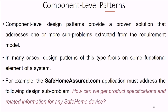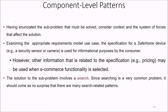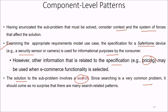Component-level design patterns provide a proven solution that addresses sub-problems extracted from the requirement model. In many cases, these design patterns focus on functional elements of a system. For example, in the safe home application, a design sub-problem might be: how can we get product specification information for any safe home device? Considering the context and system of forces — examining the appropriate requirements model use case — the specification for a safe home device such as a security sensor or camera is used for information purposes by the consumer. However, related information such as pricing may be used when e-commerce functionality is selected. The solution to such sub-problems often involves a search, and it should come as no surprise that there are many search-related patterns.